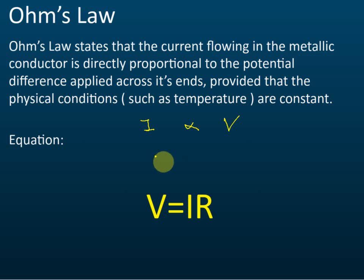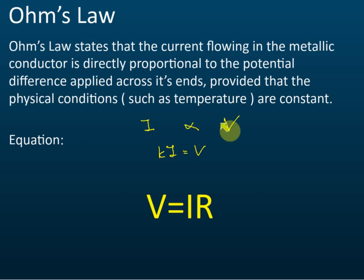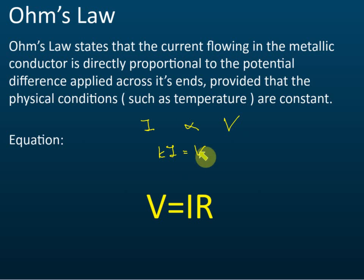If we write this in equations, I is proportional to V. You should have learned this in mathematics. If we have a proportional relationship and write it as an equation, we must multiply one of the variables by a constant K. So it becomes Ki equals V, or V equals Ki.